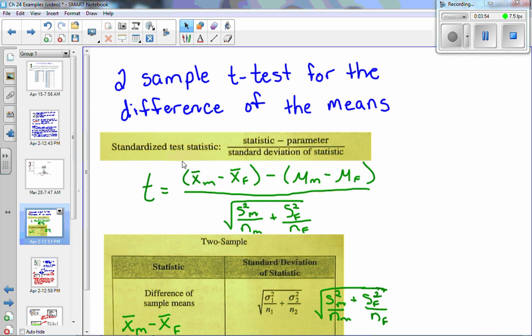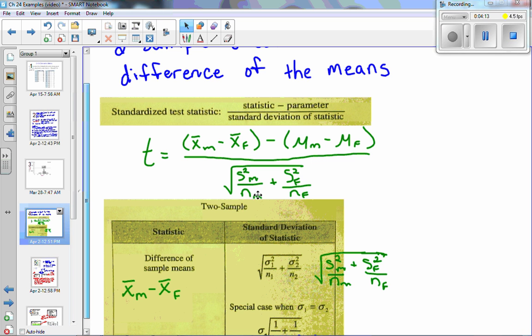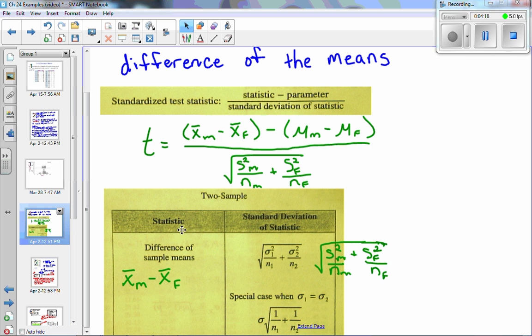This is from your yellow sheet. The standardized test statistic that we use is going to be t. To find that, we do the statistic, which is the difference between the sample means, minus the parameter, which is the difference between the parameters, divided by the sample standard deviation. This comes right off your yellow sheet. Notice that for the statistic, it says the difference of the sample means, which in this case would be x̄ sub m minus x̄ sub f. And your standard deviation of the statistic, we don't know sigma, so we're using s instead. So I have that data, so I'll be plugging that in. And this is what we end up with.